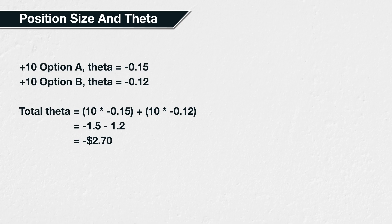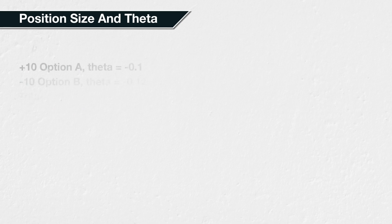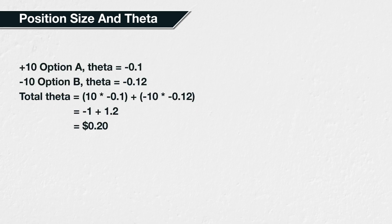This means you would expect the position to lose $2.70 over the next day if all else remains equal. Finally, if you purchase 10 puts with a theta of minus 0.1 and sell 10 puts with a theta of minus 0.12, the total theta of your position is 20 cents. This is calculated as 10 multiplied by minus 0.1 plus minus 10 multiplied by minus 0.12, which equals minus 1 plus 1.2, which equals 0.2. Remember, we have sold the second leg of puts, so the position size is minus 10 rather than just 10. This gives us a positive theta for that leg, and the total position also now has positive theta, meaning you would expect the position to gain 20 cents over the next day if all else remains equal.